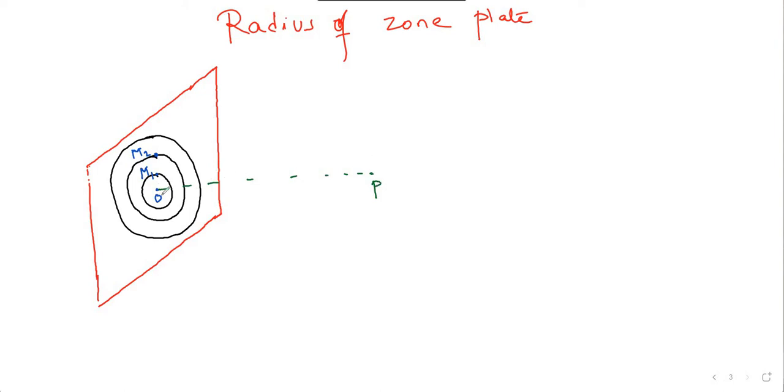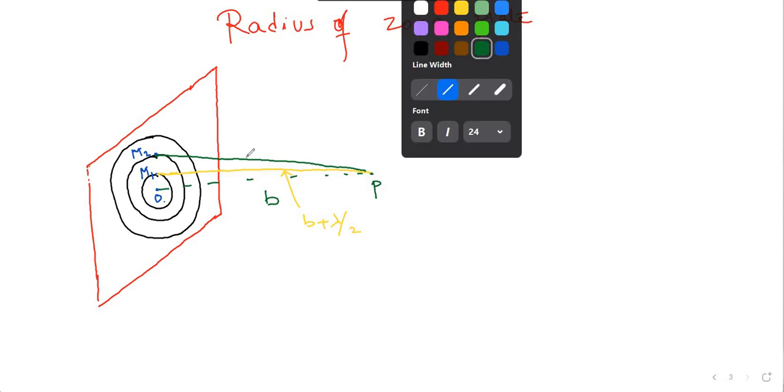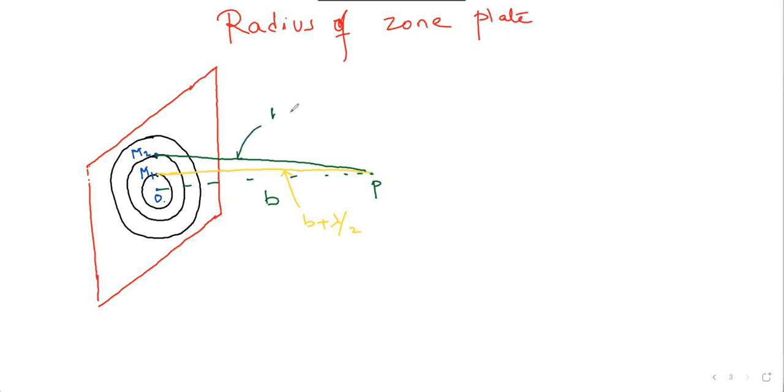Now, this distance from O to P, that is OP, is this distance B. From M1 to P, you draw another line. So, this yellow line represents a length of B plus lambda by 2. Lambda means the wavelength of the light that is being used. And this green one has length of B plus twice of lambda by 2.